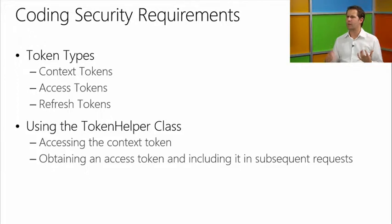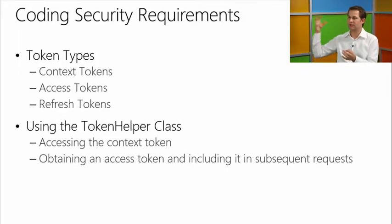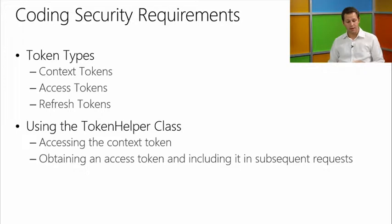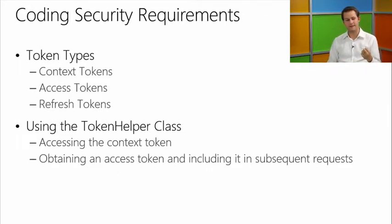If you need more access tokens, the context token includes a refresh token, which allows you to call back and get a new access token. The refresh token lasts about six months. You can cache that in a database, and your app in the background can grab the refresh token, use it to get a new access token, and call back into SharePoint without user interaction — the equivalent of timer jobs, like firing off a process in Azure that calls back into SharePoint.